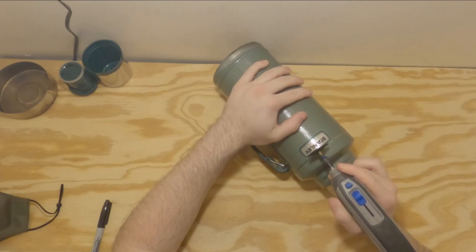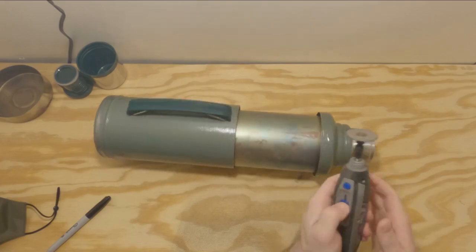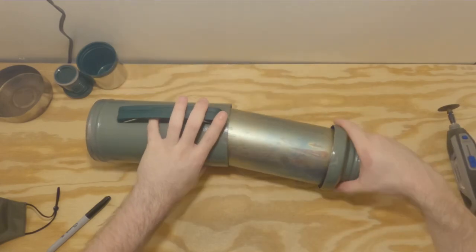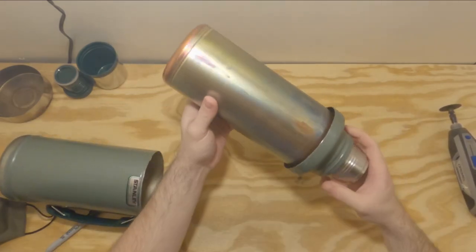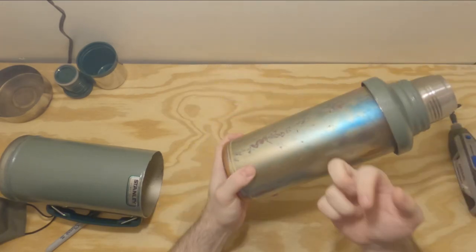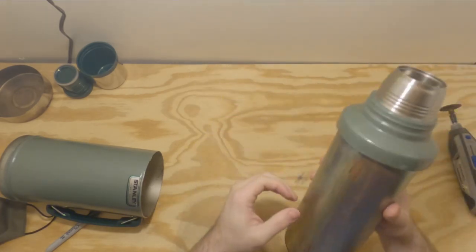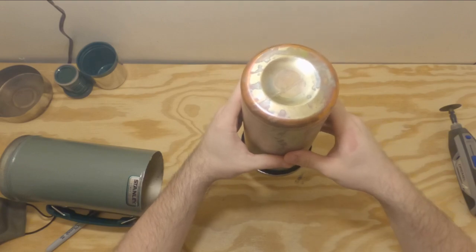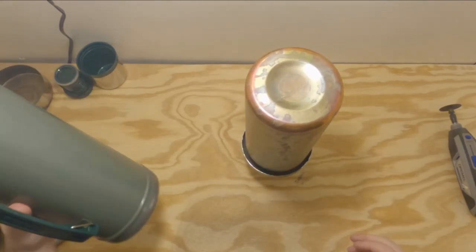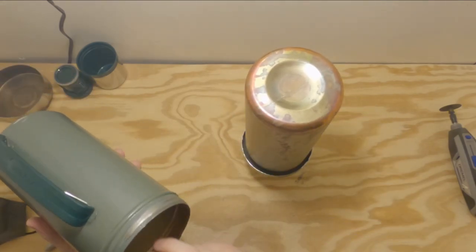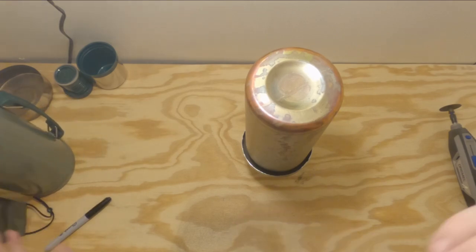As you can see here, I'm using a Dremel tool. Once you cut all the way around, you now have the inside of the bottle. This is the actual part that holds the liquid and this is the part we're going to be cutting away to shorten it.